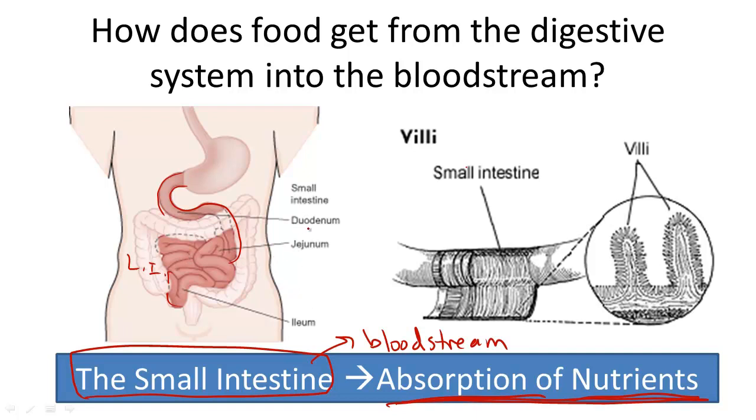The small intestine is made up of three parts: the duodenum, the jejunum, and the ileum.